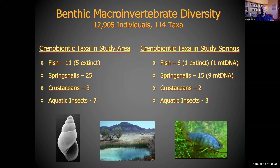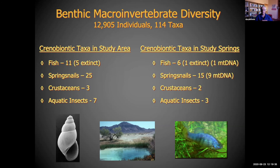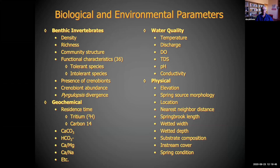For benthic macroinvertebrate diversity, we sampled benthic BMIs in all these systems. We had 12,905 individuals and 114 taxa found across all these springs. In addition, we looked at the crenobiontic taxa — this region has a lot of them — with a summary on the left showing how many are found in our study area. The study springs had a pretty good representation. We also noted extinct taxa — springs they occupied before going extinct — so the DNA work gave fair representation for spring snails and fish too.